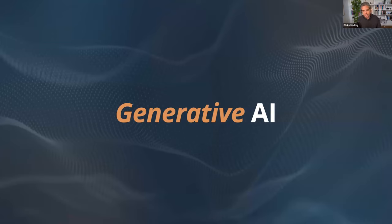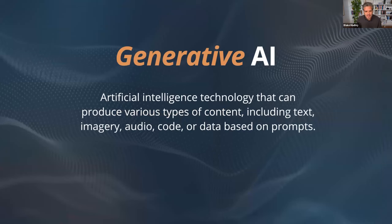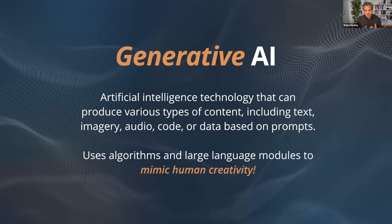I want to talk about generative AI. Sheila explained machine learning and AI and how it's been around for a long time. Generative AI has really become popular within the last couple of years, since people have heard of ChatGPT, which uses generative AI. The definition is: artificial intelligence technology that can produce various types of content, including text, imagery, audio, code, or data based on prompts. It's almost immediate — you put in a prompt and immediately receive content back.